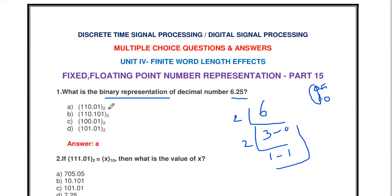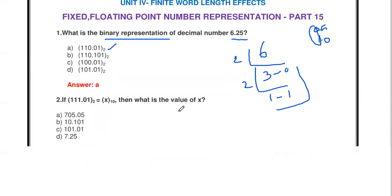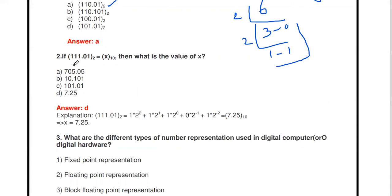So the binary representation of 6.25 is 110.01. In a similar way you can convert any decimal number into its corresponding binary representation. The next question: the binary number 111.01 equals decimal number x — what is the value of x?